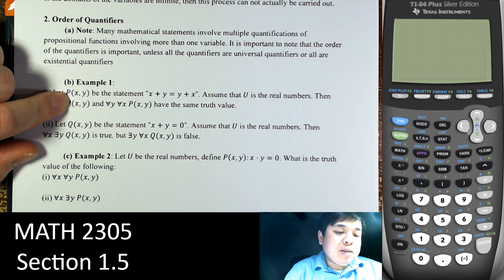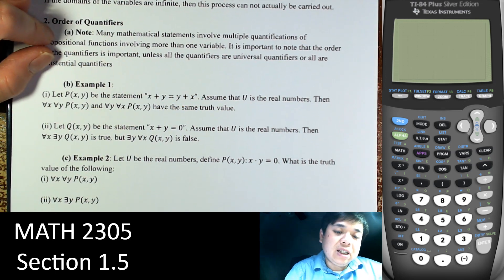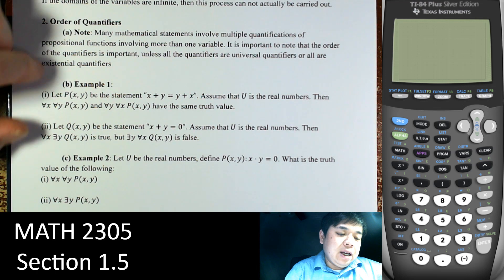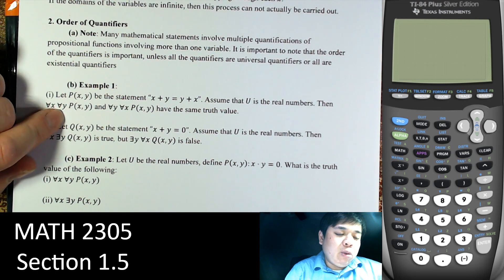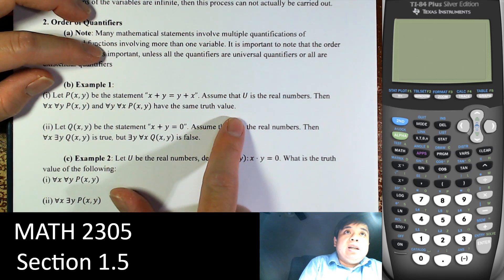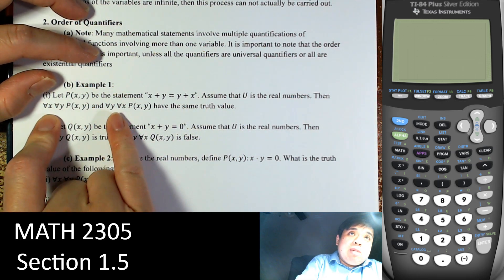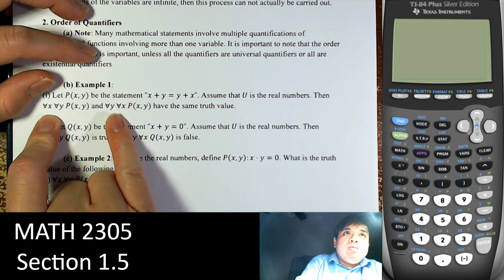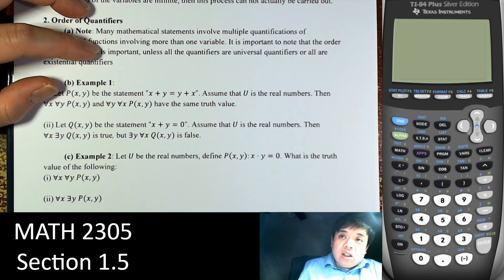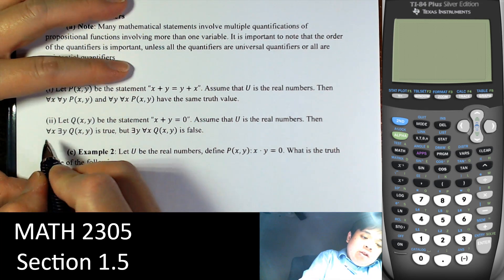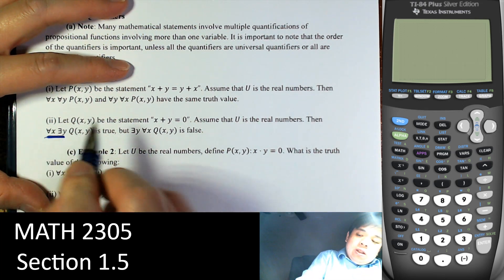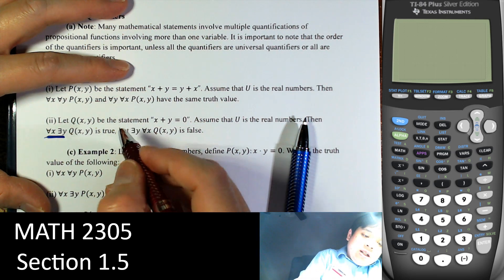Next: order of quantifiers. Many mathematical statements involve multiple quantification with more than one variable. It is important to note that the order of quantifiers matters. We cannot just interchange the quantifiers and get the same thing — we'll see that in the next example.